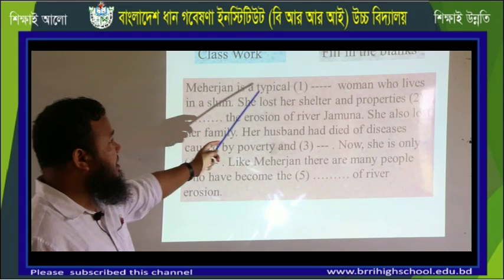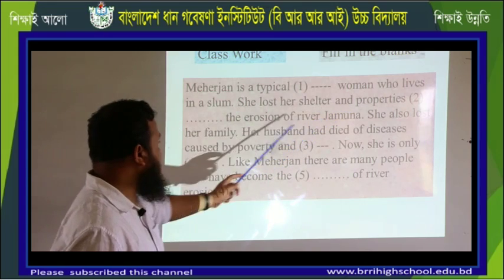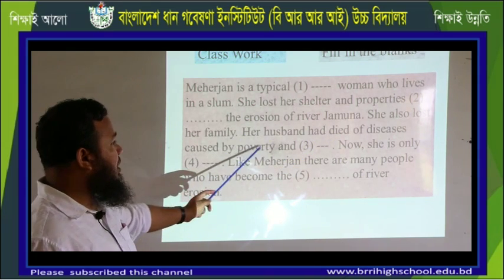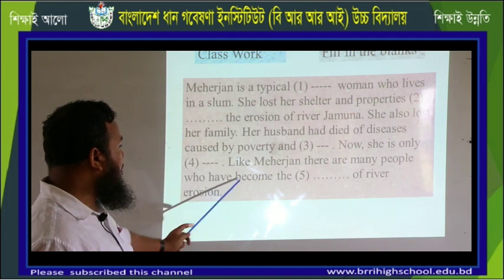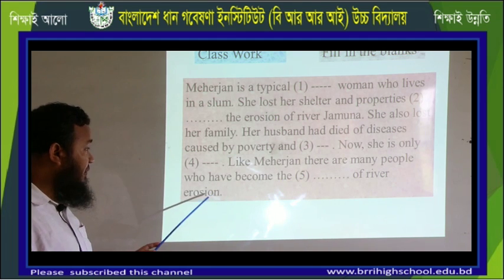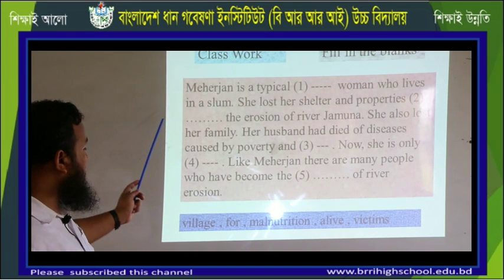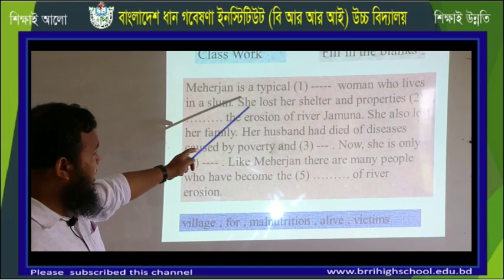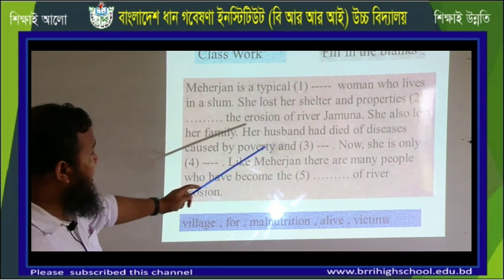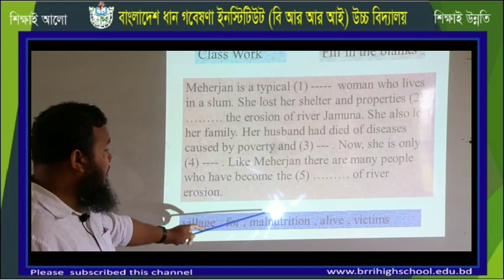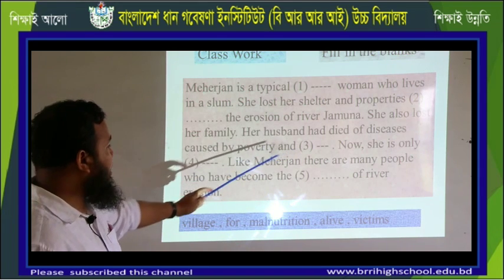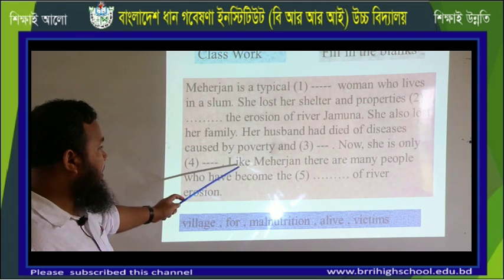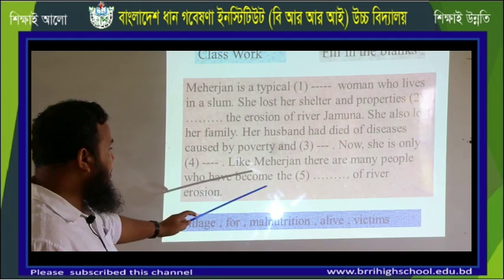Now, the fill-in-the-blanks exercise. Meherjan is a typical village woman who lives in a slum. She lost her shelter and properties due to the erosion of river Jamuna. She also lost her family — her husband died of disease caused by poverty and malnutrition, which means 'oppusti' in Bengali. Now she is the only survivor. Like Meherjan, there are many people who have become victims of river erosion.